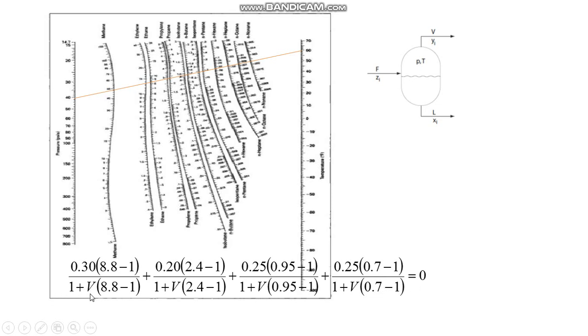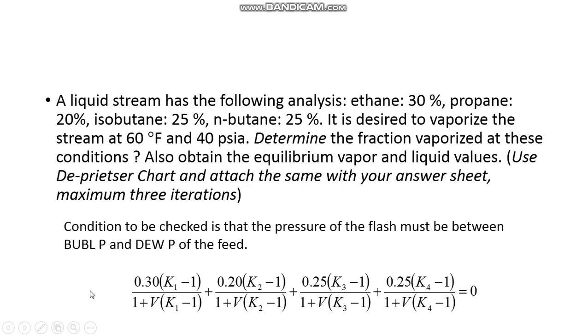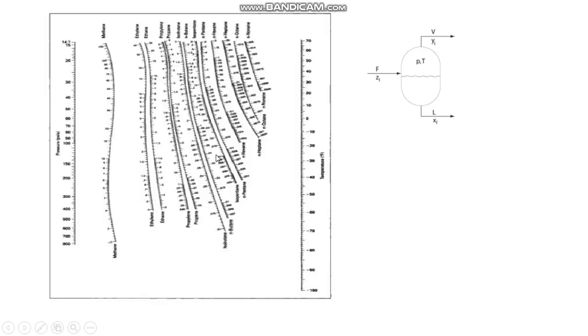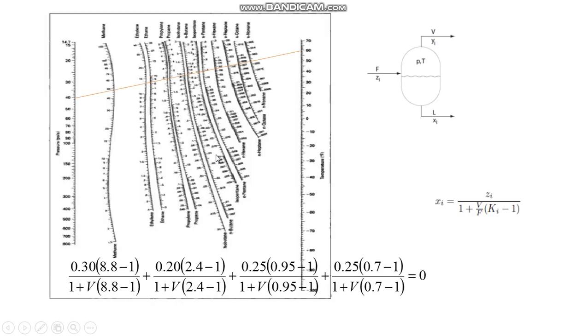So now we have to assume a value of V. Safest is V equal to 0.5. If you can relate your values of pressure with bubble point and dew point, if it is more towards bubble point, your value of V will be more towards 0. If this is more towards dew point, your value of V will be towards 1. However, you need to just give a try of different values of V and when this equals to 0 for a value of V, that is your answer for V.